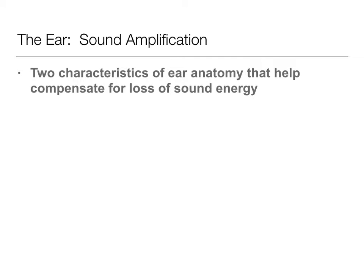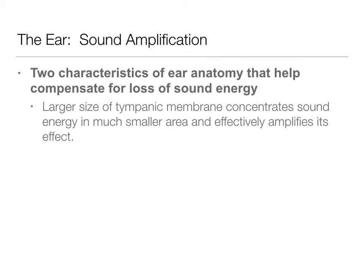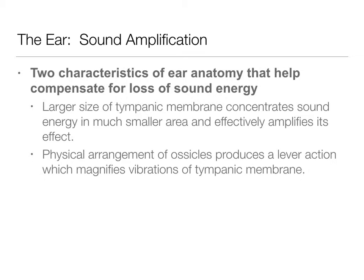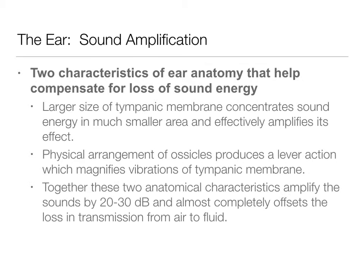Sound amplification relies on two key characteristics. The tympanic membrane concentrates the sound — being larger, it concentrates that sound into a smaller area and effectively amplifies its effect. Then those ossicles act as a lever, magnifying the vibrations of the tympanic membrane and conveying it onto the oval window. Together these two things make up almost completely for the 20 to 30 decibels of loudness that we lose when going from the air of the ear canal to the fluid of the cochlea.